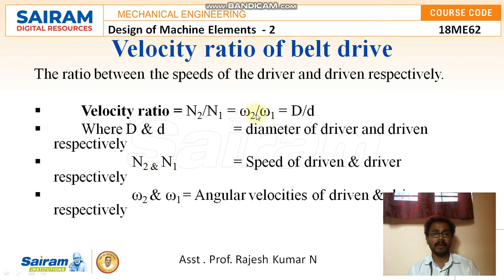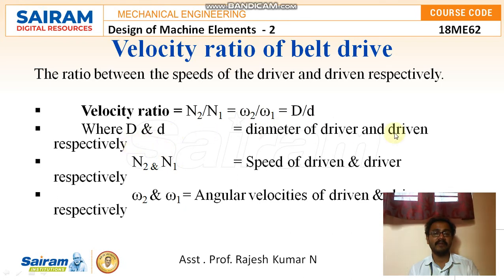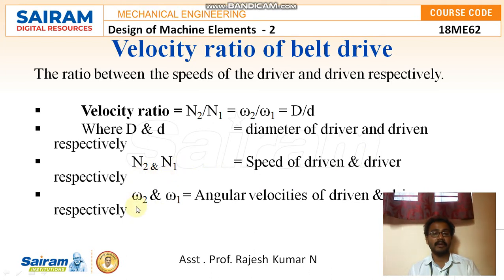Moving to the actual topic: the velocity ratio of the belt drive, which is the ratio between the speed of the driver and the speed of the driven. We can write the velocity ratio as n2/n1 = ω2/ω1 = D/d, where D and d are the diameters of the driver and driven pulleys, n1 and n2 are the speeds of the driver and follower, and ω1 and ω2 are their angular velocities respectively.